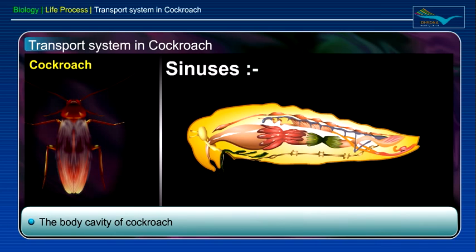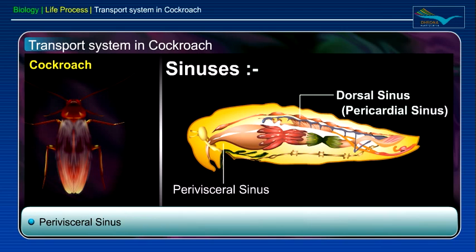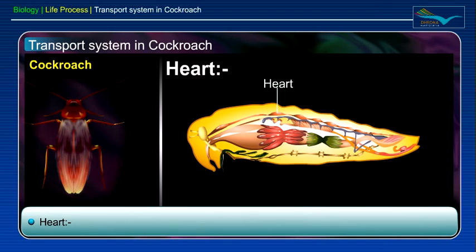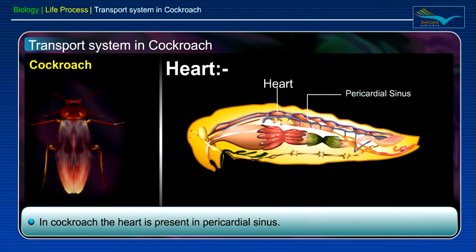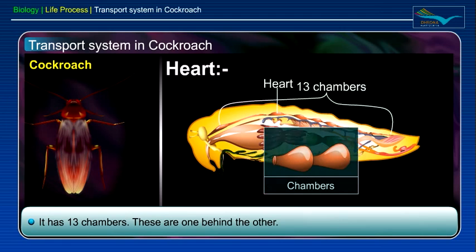The body cavity of cockroach is divided into three sinuses: the dorsal sinus, the perivisceral sinus, and the ventral sinus or perineural sinus. In addition, there is a sinus in the head. The heart in cockroach is present in the pericardial sinus. It has 13 chambers which are arranged one behind the other.